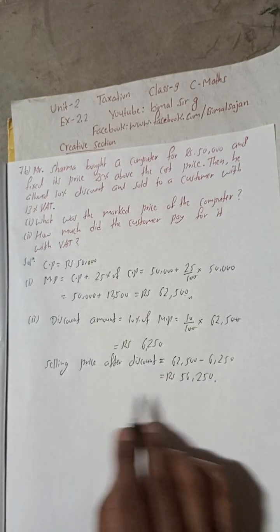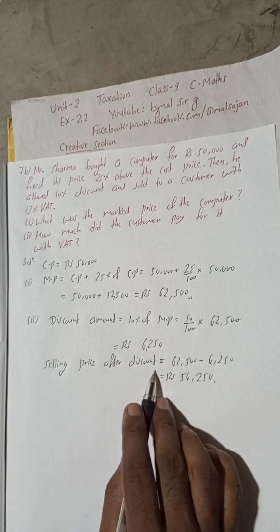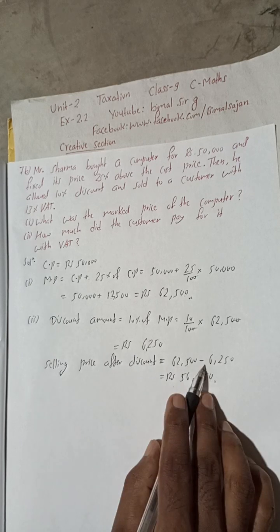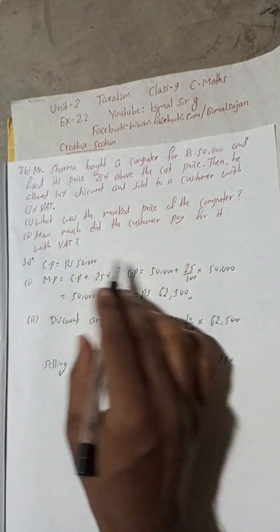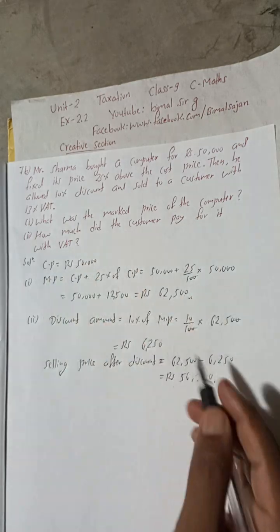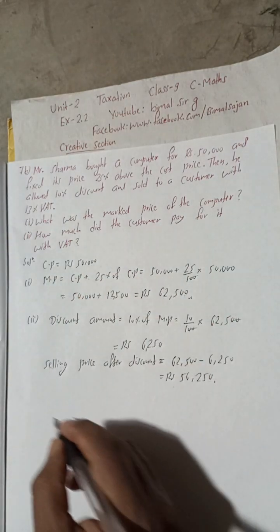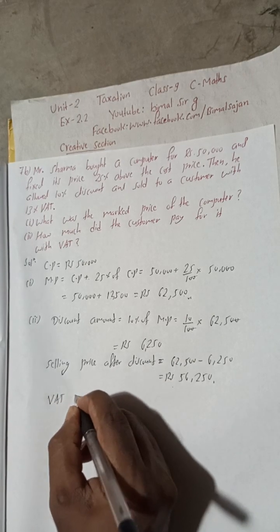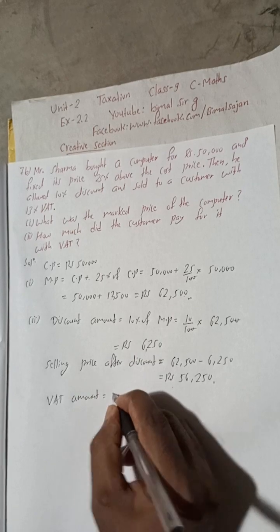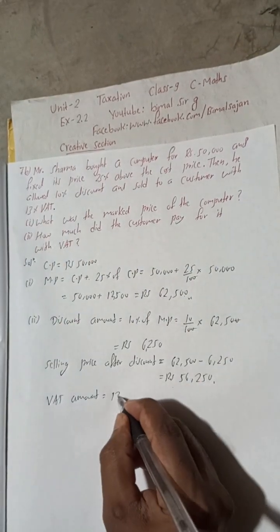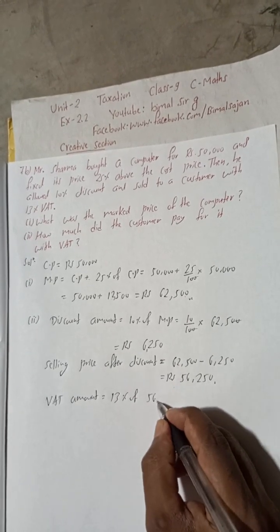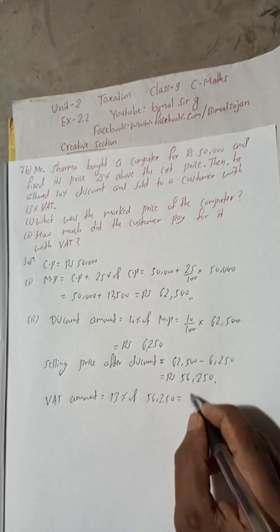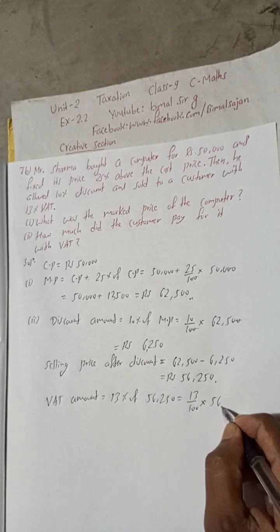Now we can apply VAT on this selling price after discount, because VAT is applied after discount. If no discount is given you can directly apply VAT, but if discount is given, subtract it first and then apply VAT. Now to find how much the customer paid with VAT, we first calculate the VAT amount. VAT percent is 13 percent, so VAT amount equals 13 percent of selling price: 13 divided by 100 into 56,250.